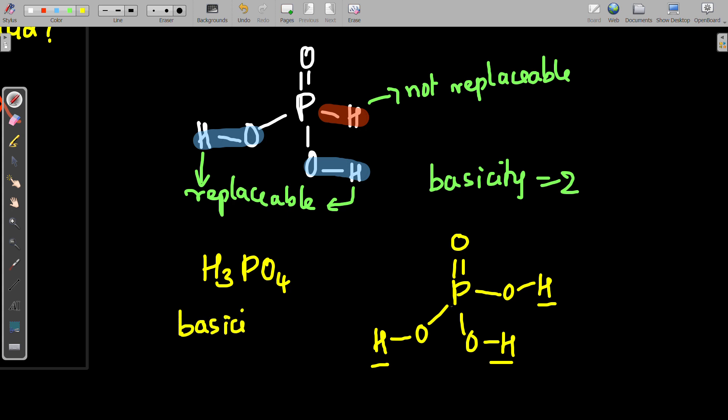Hence basicity for phosphoric acid is three, whereas basicity for phosphorus acid is two.